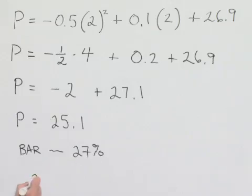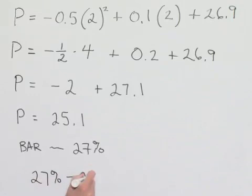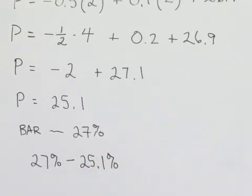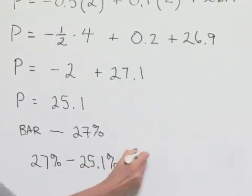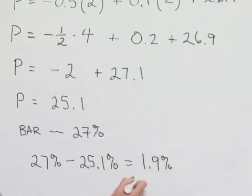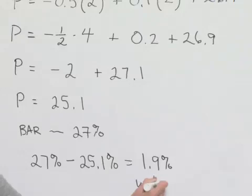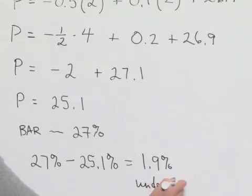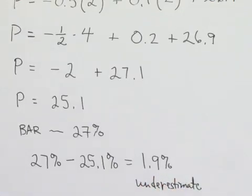By how much? We'll take our 27% and subtract from it what the model gave us which was 25 and 1 tenths percent to give us a difference of 1 and 9 tenths percent. And this is 1 and 9 tenths percent which is going to be an underestimate of the amount given to us in the bar graph.